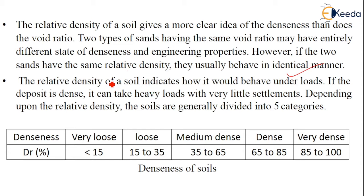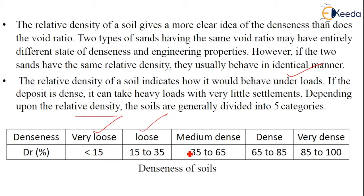The relative density of soil indicates how it would behave under certain loads. If the deposit is dense, it can take heavy loads with very little settlement, which is very advantageous for engineering structures. Depending upon the relative density, soils are generally divided into five categories: less than 15 is very loose, 15–35 is loose, 35–65 is medium dense, 65–85 is dense, and 85–100 is very dense.